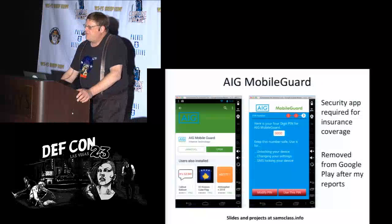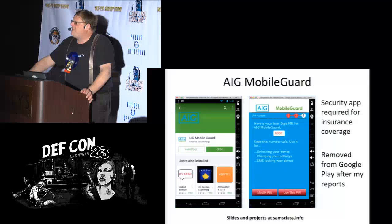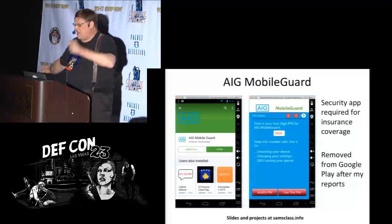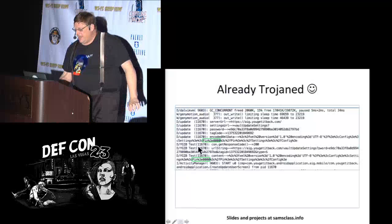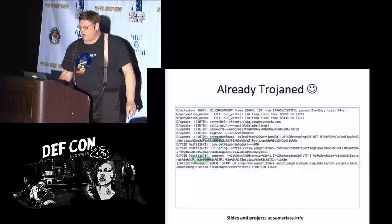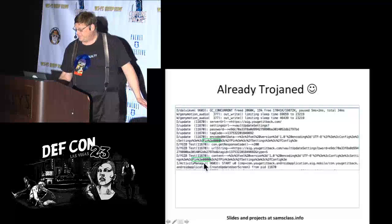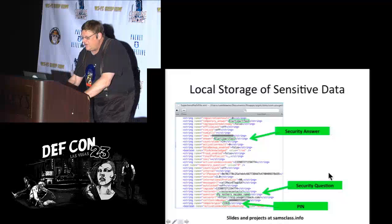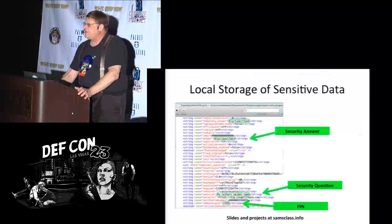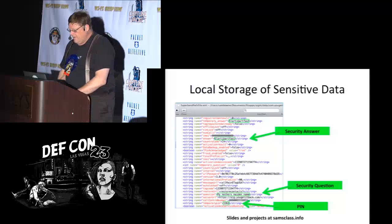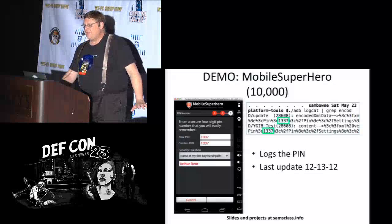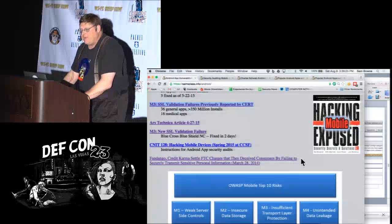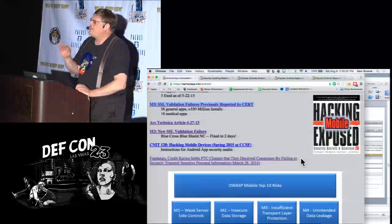I was testing all the insurance companies. There's a big insurance company called AIG — they don't have an app themselves, but there is an app called AIG Mobile Guard used to insure your phone. It's made by a company that makes Mobile Superhero. It causes you to make a PIN and then stores the PIN in plain text in the log — and on the phone it stores your security answer, your mother's maiden name, security question, and PIN, all in plain text locally. I went through other products from the same company: Mobile Superhero, Virgin Mobile Wrestling, Rebound, Rebound Mobile Security — they all have the same problem. So when you find one bad app, go find the other apps from the same developer.